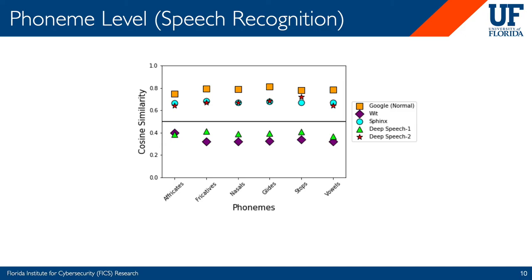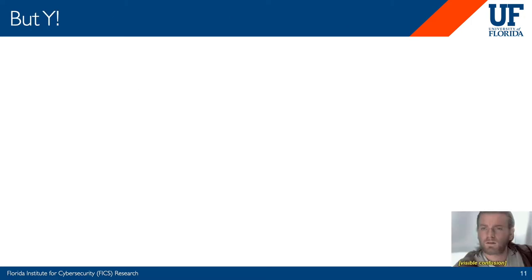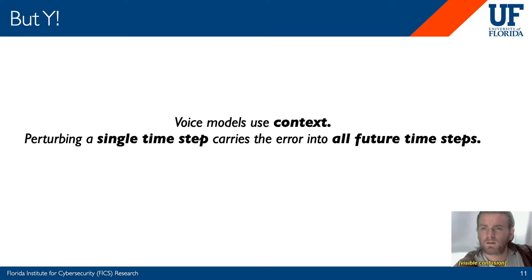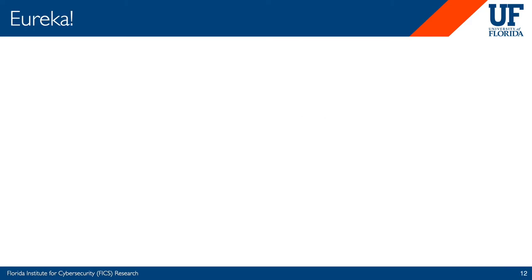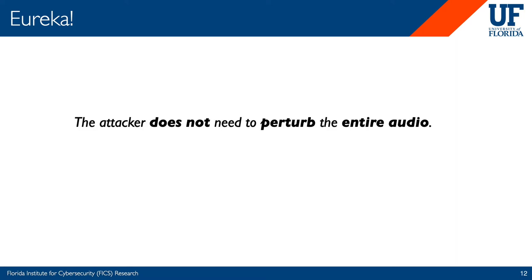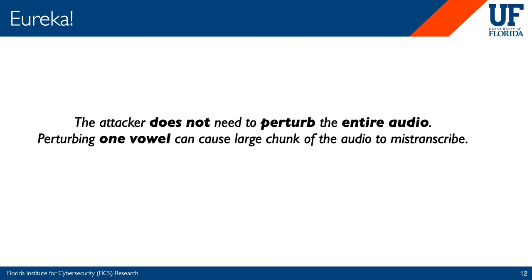To see the effect of the phoneme-level attack, we use the TIMIT dataset. We pull out individual sentences, perturb one phoneme at a time, and observe the corresponding change in transcription, measured using the cosine similarity score — the larger the cosine score, the larger the change in transcription. Changing a single vowel for Google has an average cosine similarity score of 0.8, meaning changing just a single vowel can distort the model's output by 80%. This happens because voice models use context — perturbing just a single timestep carries the error into all future timesteps, ruining the transcription. The attacker doesn't need to perturb the entire audio; perturbing one vowel or any phoneme can cause a large chunk of the audio to mistranscribe.